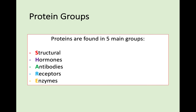There are five main groups of proteins that you need to know: structural, hormones, antibodies, receptors, and enzymes. An easy way to remember these five is SHARE — S, H, A, R, and E. If you write that out, you should hopefully be able to remember the rest of the groups and fill in the blanks for what they are.